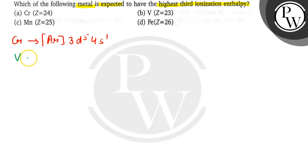For V, it's [Ar] 3d5 4s2. For Mn, it's [Ar] 3d5 4s2.